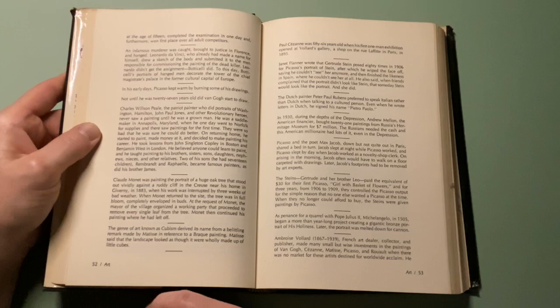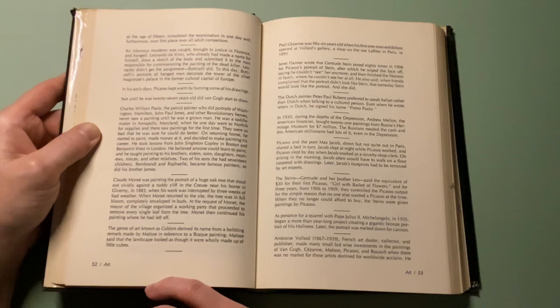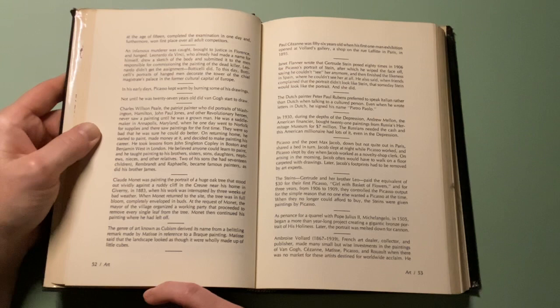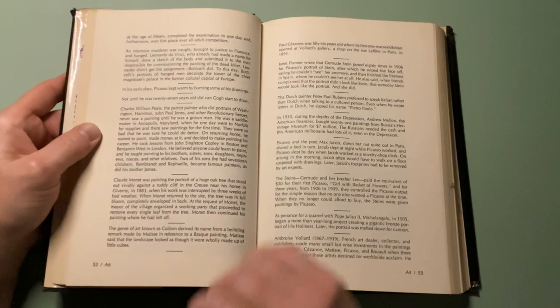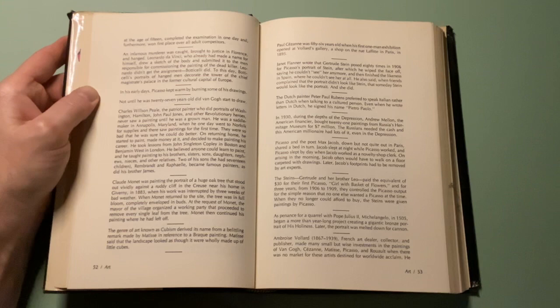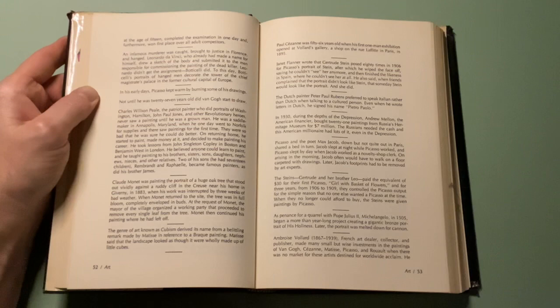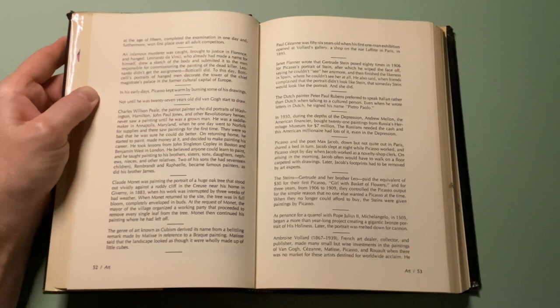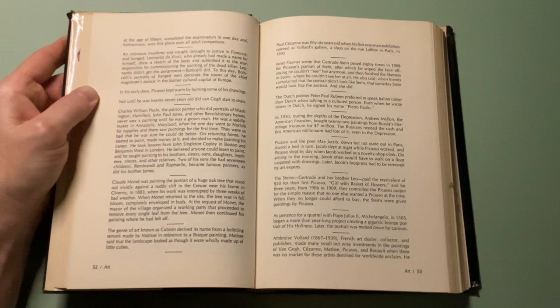Claude Monet was painting the portrait of a huge oak tree that stood out vividly against a ruddy cliff in the quarries near his home in Giverny in 1883, when his work was interrupted by three weeks of bad weather. When Monet returned to the site, the tree was in full bloom, completely enveloped in buds. At the request of Monet, the mayor of the village organized a work party that proceeded to remove every single leaf from the tree. Monet then continued his painting where he had left off.